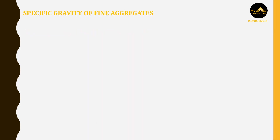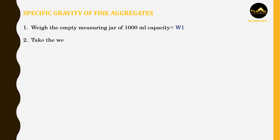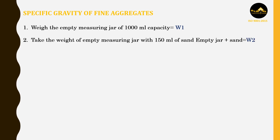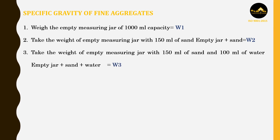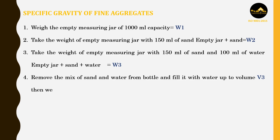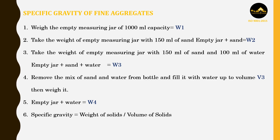Specific gravity of fine aggregates: Weigh the empty measuring jar of 1000 ml capacity, equals W1. Take the weight of empty measuring jar with 150 ml of sand — empty jar plus sand equals W2. Take the weight of empty measuring jar with 150 ml of sand and 100 ml of water — empty jar plus sand plus water equals W3. Remove the mix of sand and water from the bottle and fill it with water up to volume V3, then weigh it — empty jar plus water equals W4. Specific gravity equals weight of solids by volume of solids = (W2 − W1) / [(W4 − W1) − (W3 − W2)].